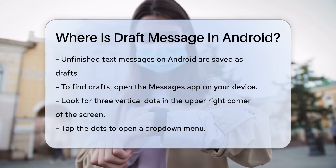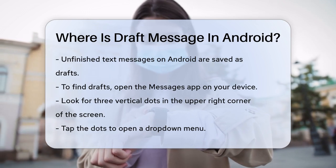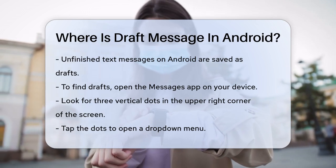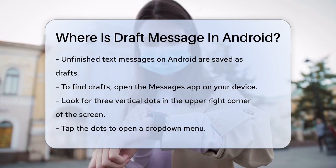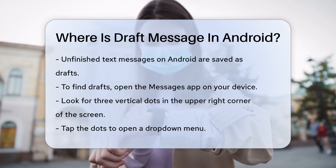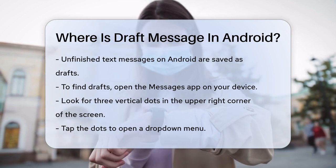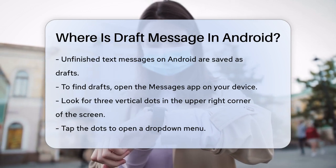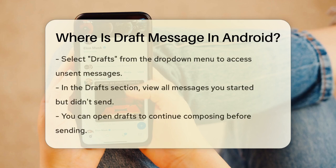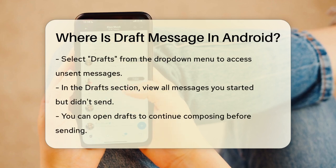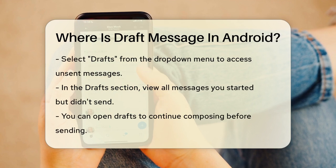To find these drafts, you need to open the Messages app on your device. Once you're in the app, look for the three vertical dots in the upper right corner of the screen. Tap on these dots and a drop-down menu will appear. From this menu, select Drafts.